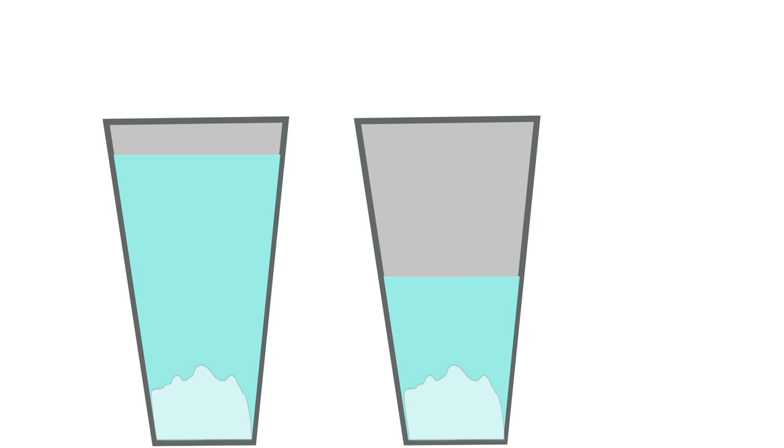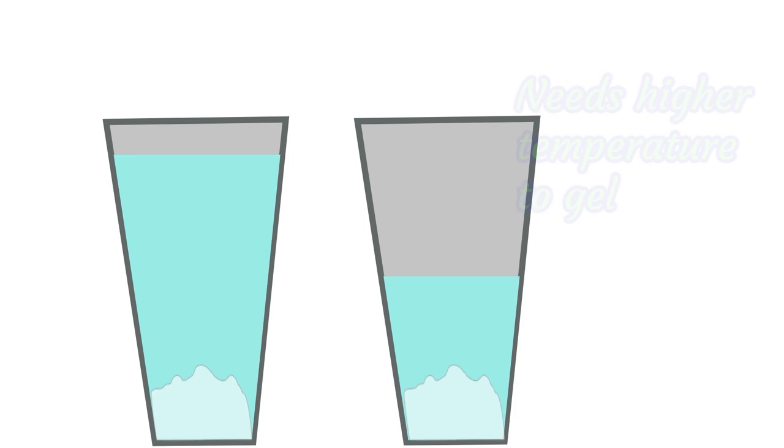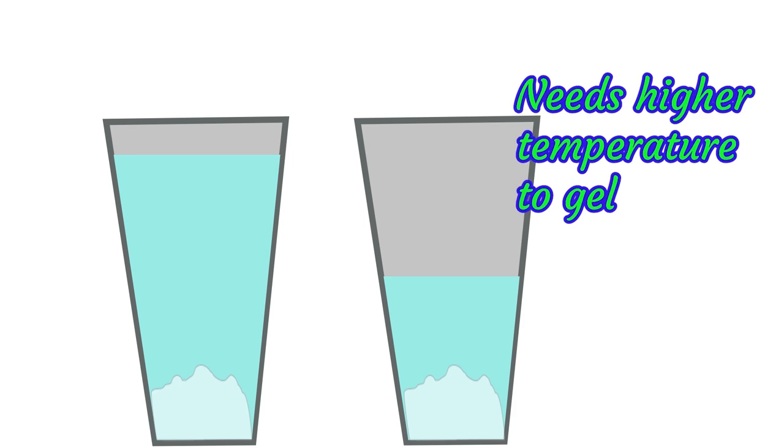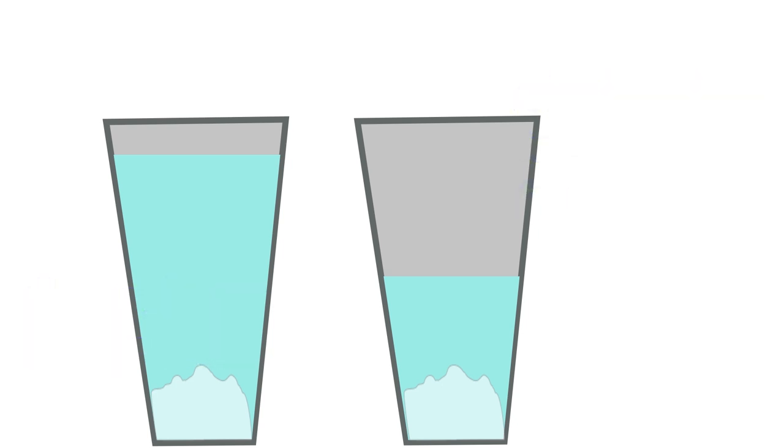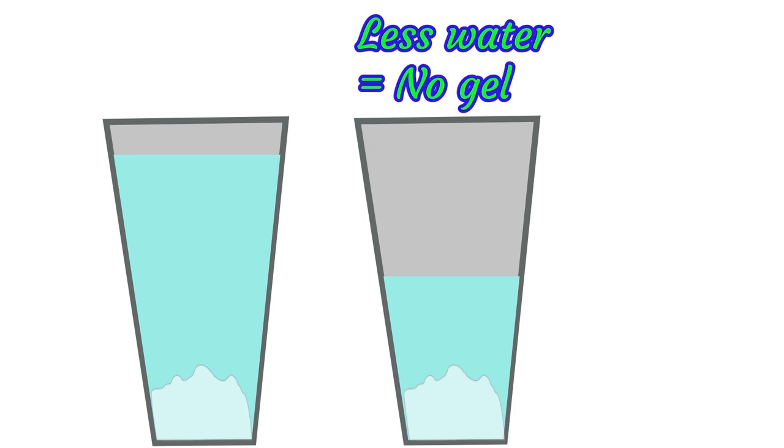Now when you have a soap with less water, it will actually saponify quicker and it will go through gel phase at a higher temperature. If you have more water, it will go through gel phase at a lower temperature and that gel phase will actually last longer. So because I've now controlled the water and I'm also going to control the temperature, my low water soap will not gel, we hope, but my high water soap should go through gel.